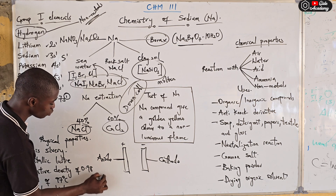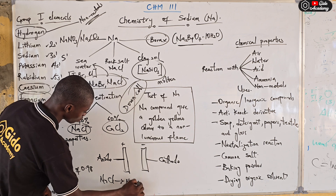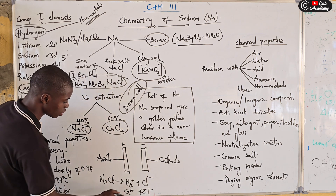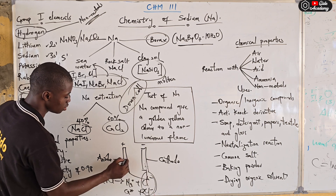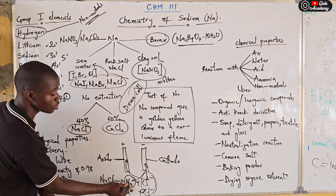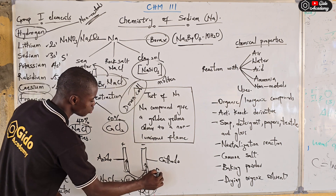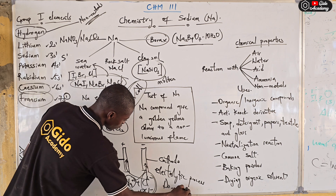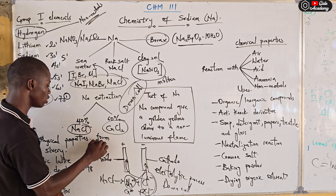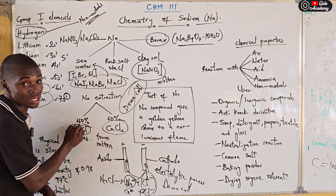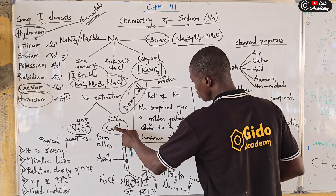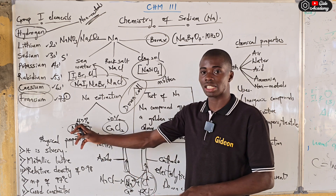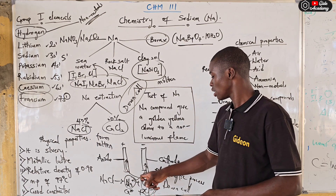In the Down cell, when sodium chloride dissociates it gives Na⁺ and Cl⁻, and when calcium chloride dissociates it gives Ca²⁺ and Cl⁻. Chlorine is liberated at the anode, while sodium — which is what we are looking for — is deposited at the cathode. So in this electrolytic process using the Down cell, sodium is liberated at the cathode and chlorine is liberated at the anode.